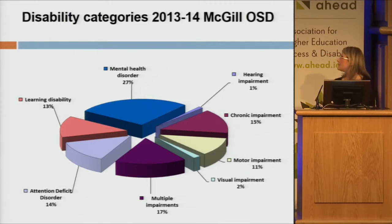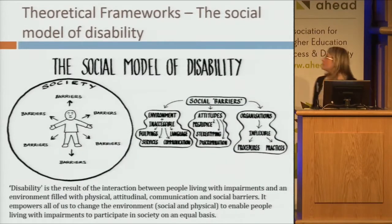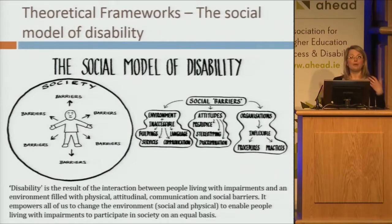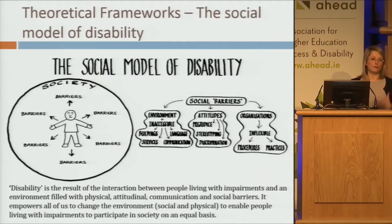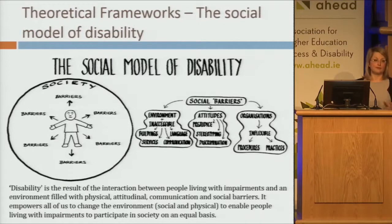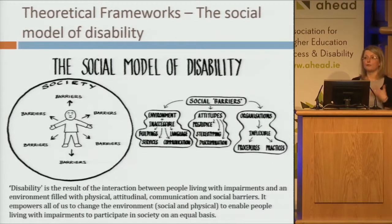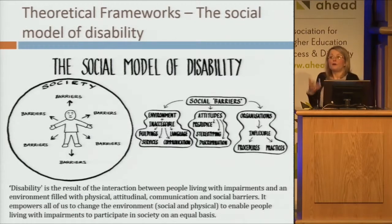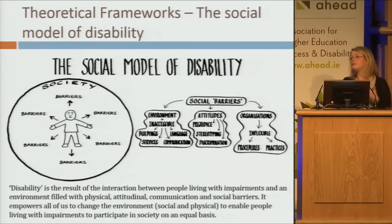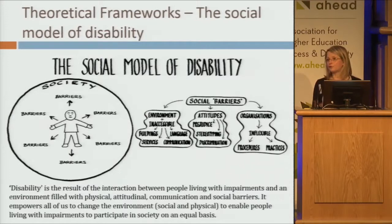The increase in student numbers as well as the variety and complexity of diagnoses we see at McGill has basically led us to rethink the way we provide services to students. It's also a question of sustainability — with 1,700 students, we wondered whether the administrative processes and procedures we were going through were creating more work for ourselves and more barriers for students. Do we actually do more work than we have to?